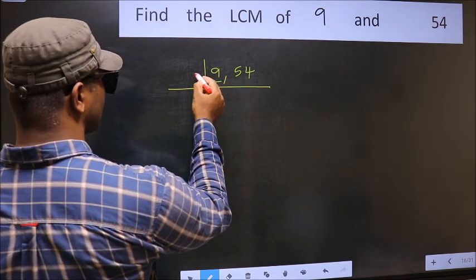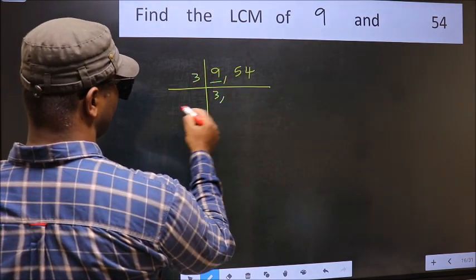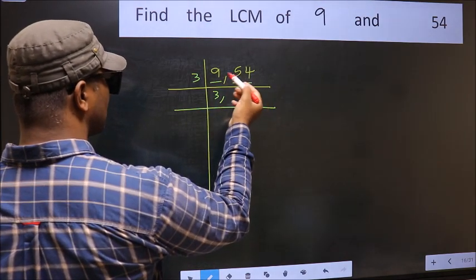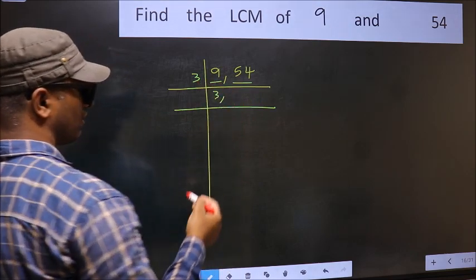9 is 3 times 3 is 9. The other number 54. To check whether 54 is divisible by 3 or not.